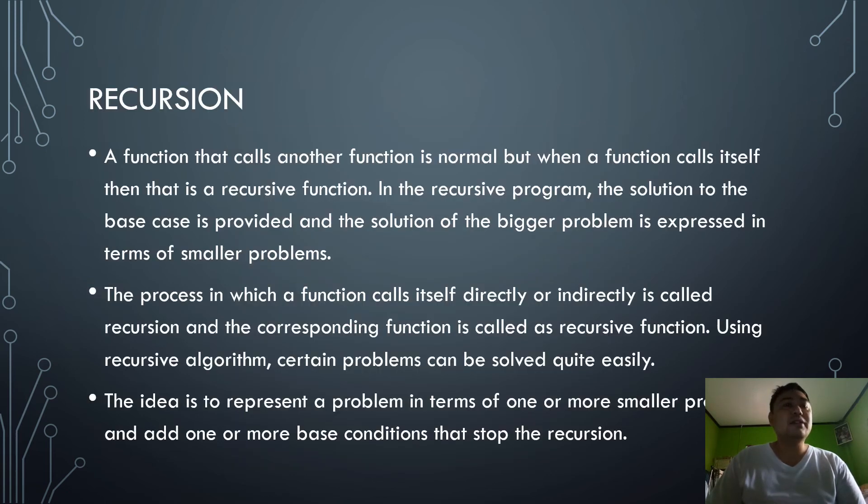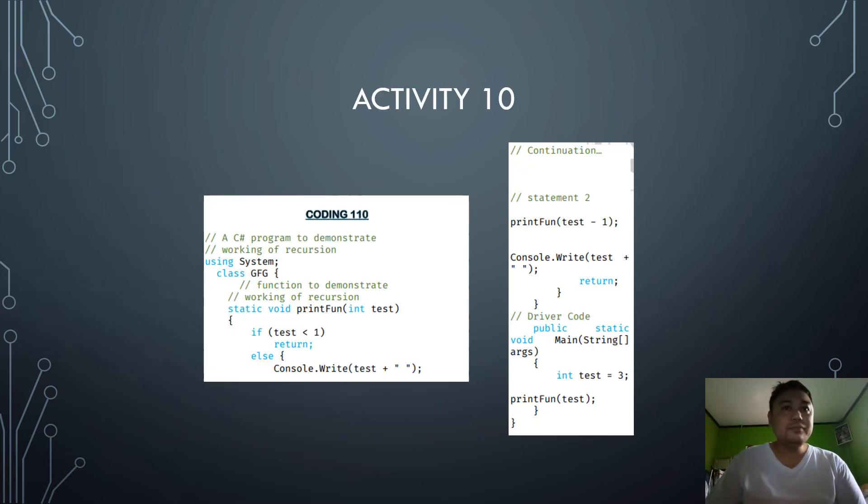The last topic is recursion. It is a function that calls another function that is normal, but when a function calls itself, then that is a recursive function. In the recursive program, the solution to the base case is provided, and the solution of a bigger problem is expressed in terms of smaller problems. The process in which a function calls itself directly or indirectly is called recursion, and the corresponding function is called a recursive function. Using recursive algorithm, certain problems can be solved quite easily. The idea is to represent a problem in terms of one or more smaller problems and add one or more base conditions that stop the recursion. As shown in our syntax, it would be evaluated with a probability for recursion.